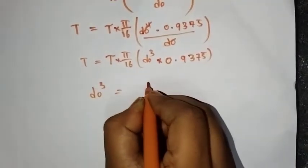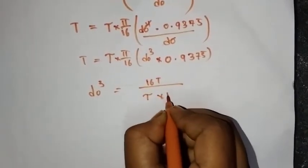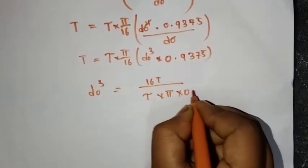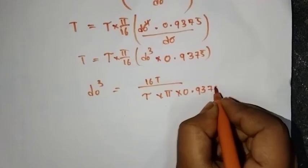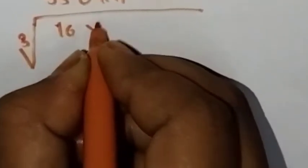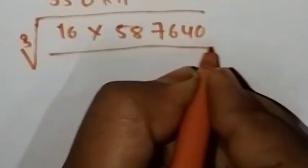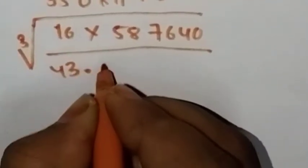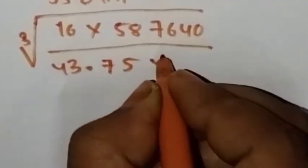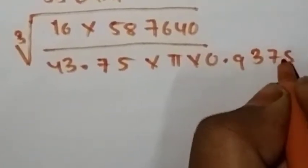D o cube is equal to 16 T by tau into pi into 0.9375. D o power 3 equals 16 into 587640 by 43.75 into pi into 0.9375.